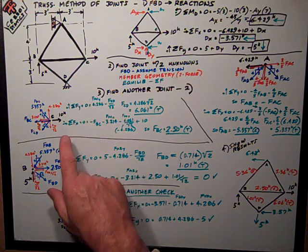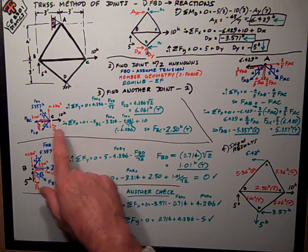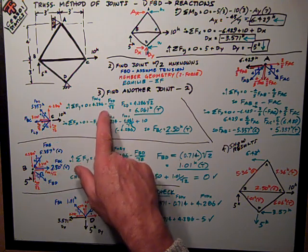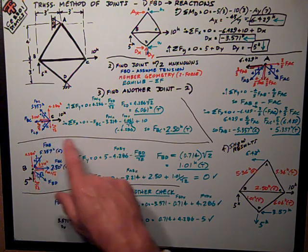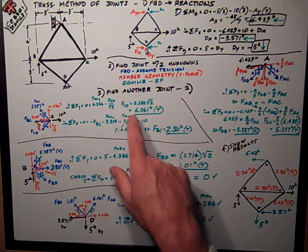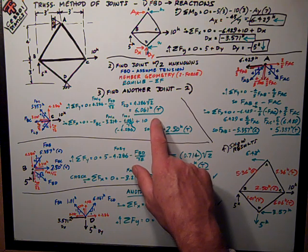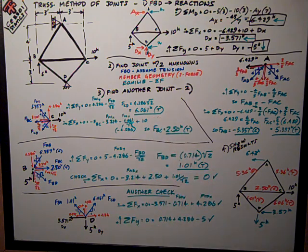I first do a sum of forces in the y direction calculation. I've got this positive and negative because of the assumption of FCD, and its component is divided by the square root of 2. So FCD works out to be 6.06, tension, positive.